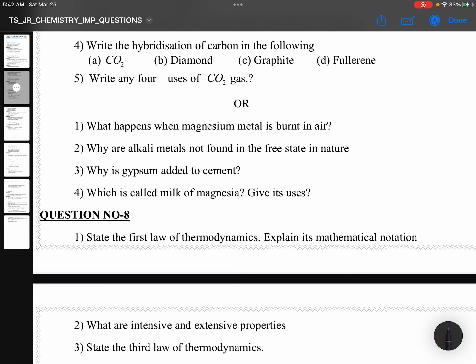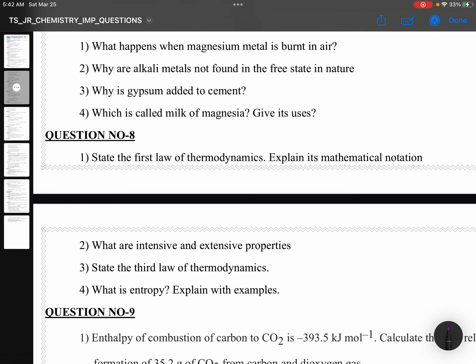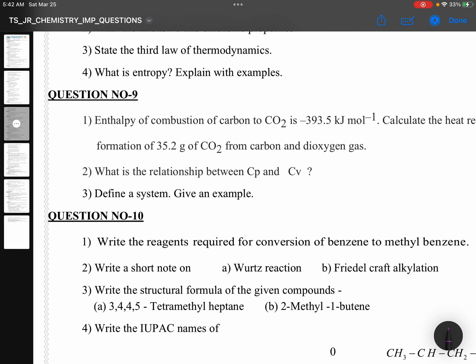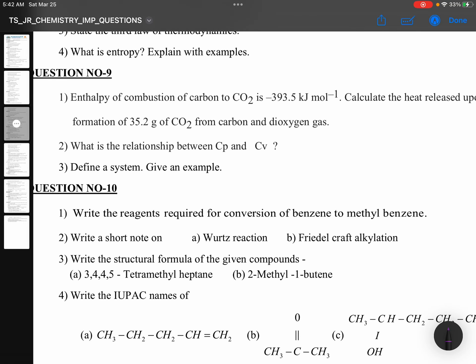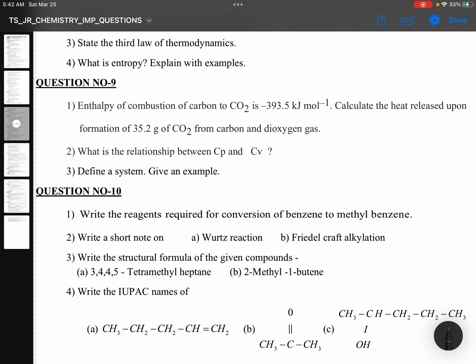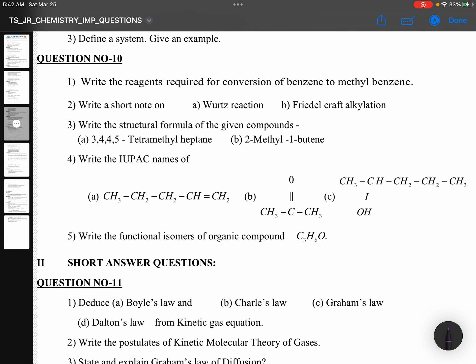Or, what happens when magnesium metal is burnt in air? Why are alkali metals not found in free state in nature? Why is gypsum added to cement? Which is called milk of magnesia, give its use. Milk of magnesia is Mg(OH)2. It is laxative. Question number 8: State the first law of thermodynamics. Explain its mathematical notation. What are intensive and extensive properties? State the third law of thermodynamics. What is entropy? Explain with examples.